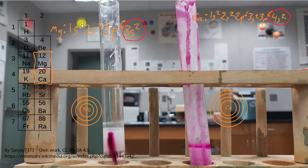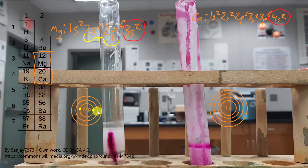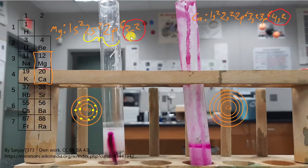For magnesium, if we take the first principal energy level and represent electrons on the first ring, there are 2 electrons — so we draw 2 dots. The second principal energy level includes both the 2S and the 2P, so we represent it on the second ring: 2 plus 6 gives a total of 8 electrons. Then in the third principal energy level, there are 2 electrons, so we draw 2 electrons on that ring.